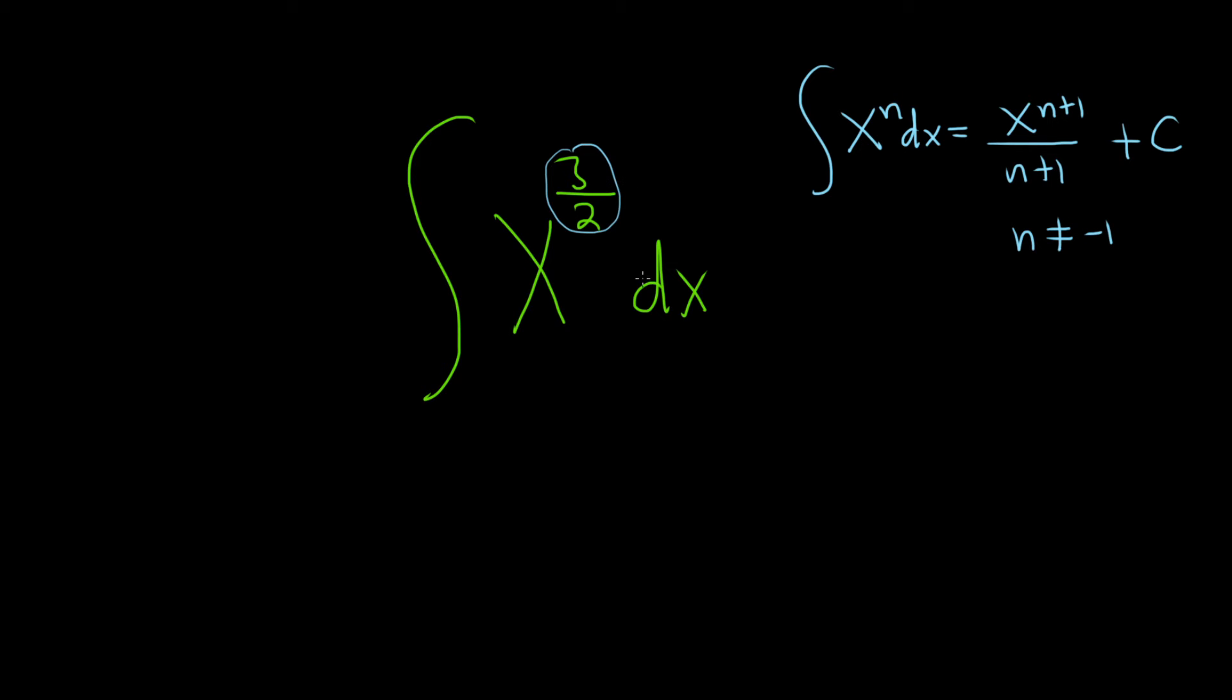But no problems here because it's 3 halves. I'll do the math on the side. We're taking 3 halves and adding 1 to it, so it's really 3 halves plus 2 halves. Think of 1 as 2 halves, and now you can add the fractions to get 5 halves.